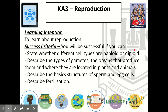Our learning intentions today are to learn about reproduction. By the end of this lesson, you'll be able to state whether different types of cells are haploid or diploid, describe the types of gametes, the organs that produce them, and where they're located in plants and animals, describe the basic structures of sperm and egg cells, and describe fertilisation.